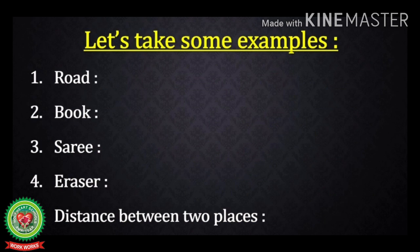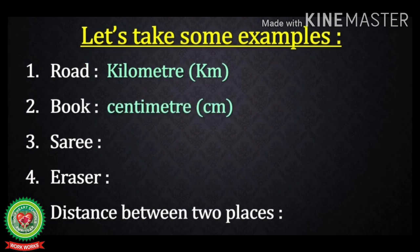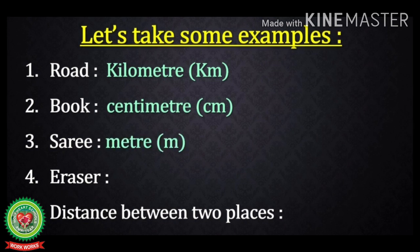Now let's take some examples: road, book, sari, eraser, and distance between two places. First, road — a road is very lengthy and you cannot see its end, so it is measured in kilometers. You must have seen landmarks where distances of various places are written in kilometers. Next, book — a book is measured in centimeters because you can measure it with a scale and your hand span only.